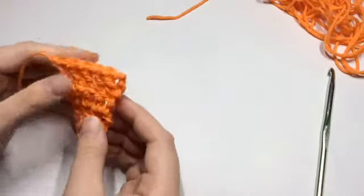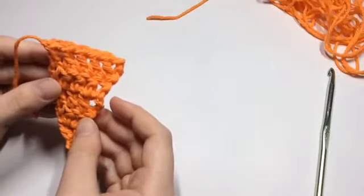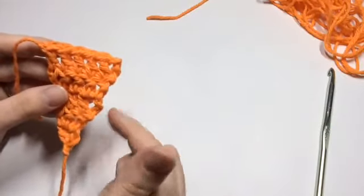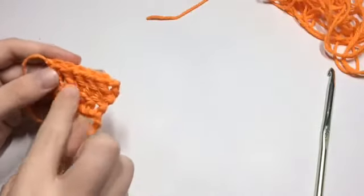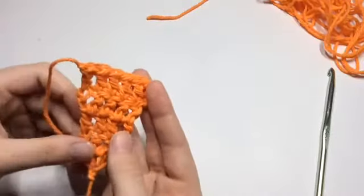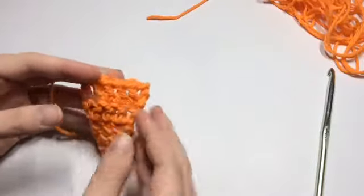And also too, if you wanted to do a half double crochet version, you could easily do that. You would just do instead of doing the chain three, you would just do chain two and you would just do half double crochets. It would give it a little tighter of a look instead of being as loose as the double crochet is. But again, that is totally up to you.